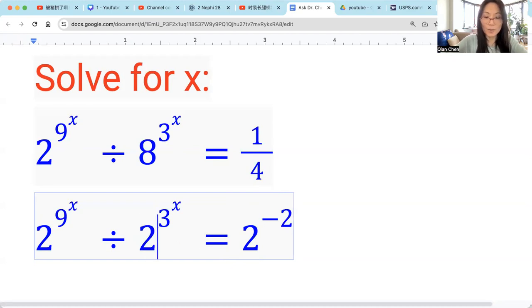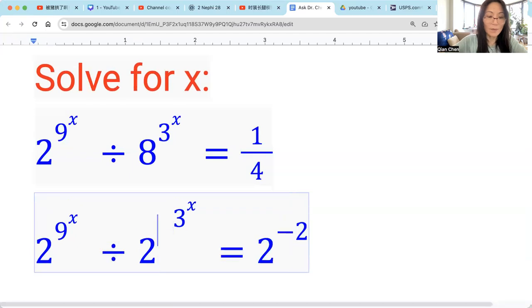So 1 over 4 can be written as 2 raised by negative 2. So similarly, this 8 is 2 raised by 3. Then we have 3 layers multiplied by, so 3 times 3 raised by x.